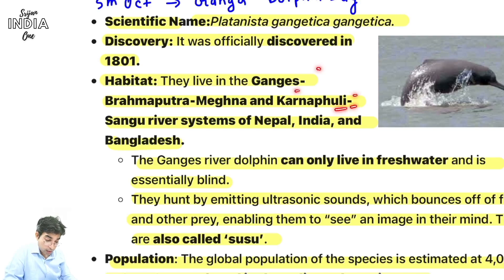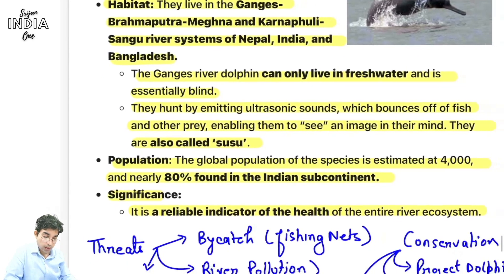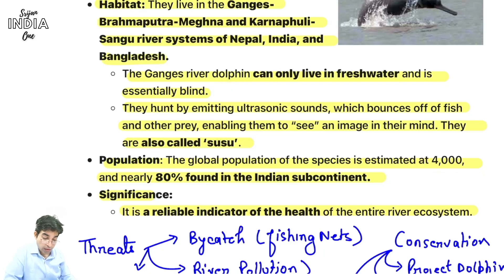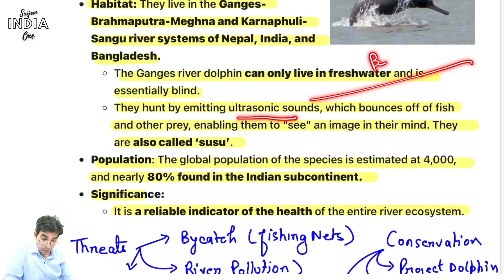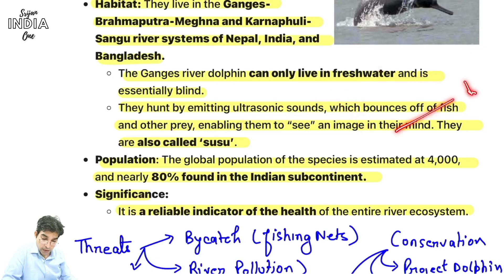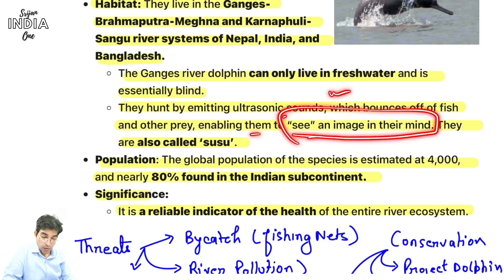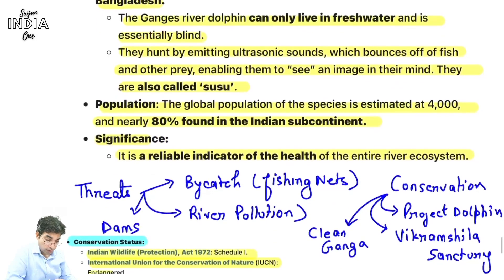Scientific name hai Platanista gangetica. 1801 mein isko dhundha gaya tha. Dolphin bahut intelligent hoti hai. Ganga, Brahmaputra, Meghna, Karnaphuli, Sangu river system mein - Nepal, India, Bangladesh mein Gangetic dolphin milti hai. Ganga River Dolphin can only live in fresh water - khare paani mein nahi. Yeh kind of blind bhi hoti hai, toh navigate kaise karegi? Ultrasonic sound se - jaise bats karte hain - sound aayegi, wapas takraake aayegi, detection se calculate kar leti hai ki kitne distance par object hai aur navigate kar leti hai. Inko susu bhi bola jaata hai.